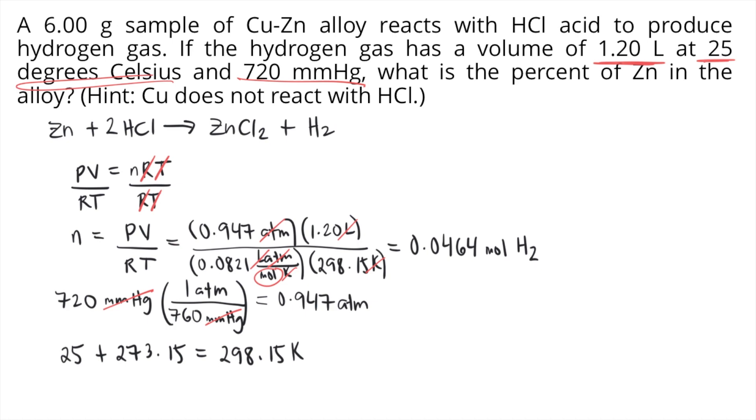Now go back to the balanced reaction. According to the balanced reaction, look at the ratio of zinc and hydrogen gas. For every 1 mole of zinc, there is 1 mole of hydrogen gas. The ratio is 1 to 1.